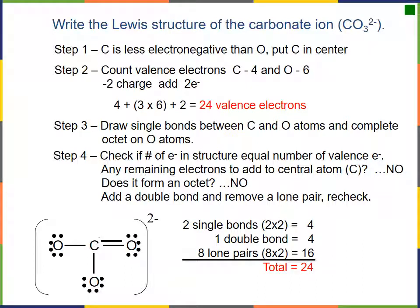Let's consider the Lewis structure of the carbonate anion. Carbon is the different one and also the most electronegative, so we put it in the center with oxygens around it. We count the valence electrons: four from carbon, six from each oxygen. It has a minus two charge, so we add two electrons, giving a total of 24 valence electrons. We draw single bonds between the carbon and the oxygens.